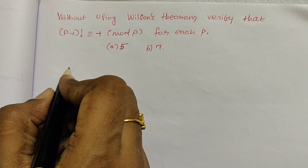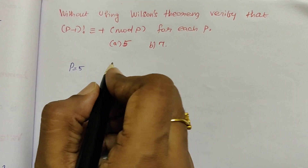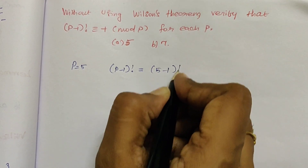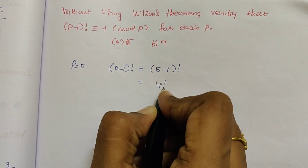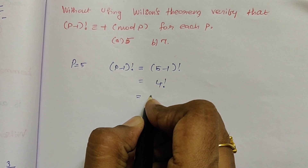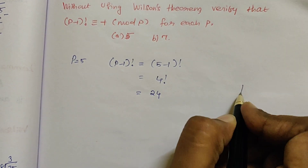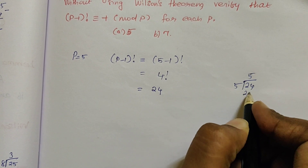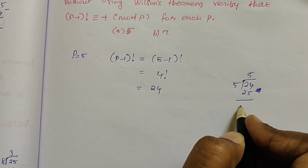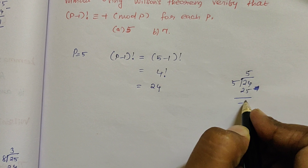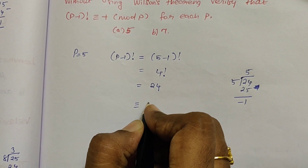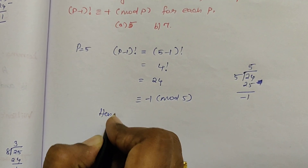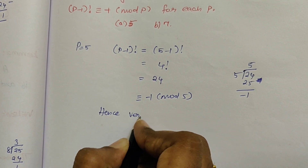When p equals 5, this (p-1)! is nothing but 5 minus 1 factorial, which is 4 factorial. We know that the value of 4 factorial is 24. When you divide 24 by 5, 5 times 5 is 25, so you get a remainder of -1, which means 24 ≡ -1 mod 5. So this relation is satisfied, hence verified.